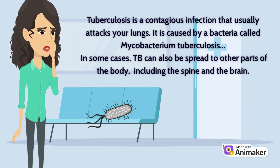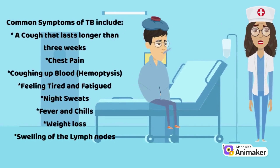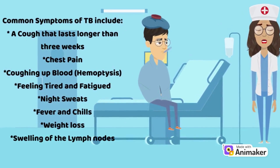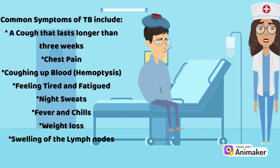TB can spread to other parts of the body, including the spine and the brain. Common symptoms of TB include a cough that lasts longer than three weeks, chest pain, and coughing up blood, which is called hemoptysis.